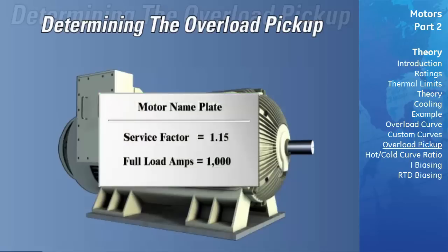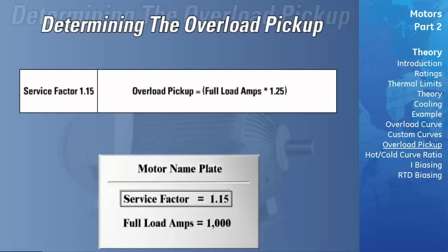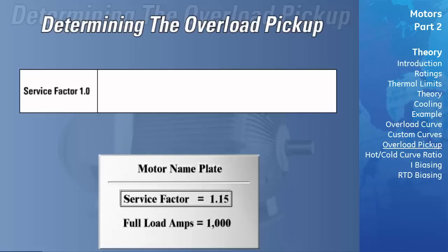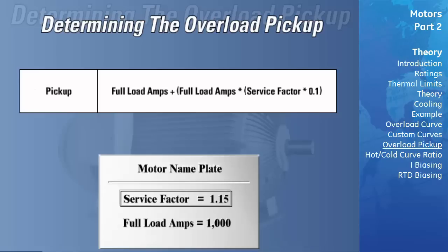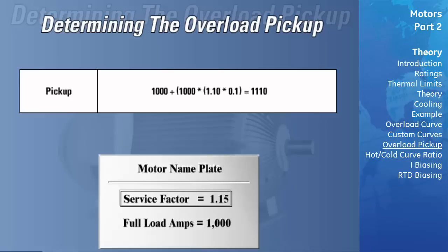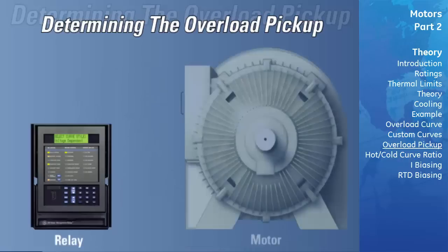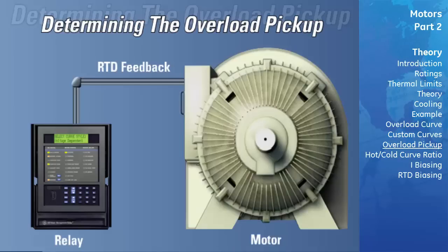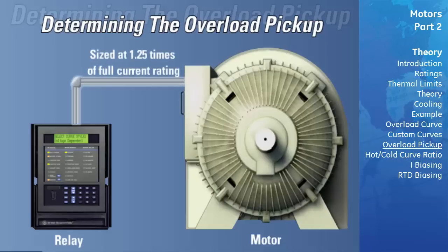The protection engineer will typically set the overload pickup to 100% of the motor's capability. For motors with a 1.15 service factor, a maximum pickup of 125% of full load current can be selected, while the maximum for 1.0 service factor motors is 115% of full load current. It is common practice to set the pickup to no more than the rated motor full load current plus no more than 10% of the service factor, unless there is another independent measure of motor temperature such as stator RTDs. Note that motor feeder cables are normally sized at 1.25 times the motor's full load current rating, which limits the overload pickup setting to a maximum of 125%.